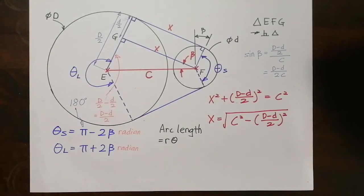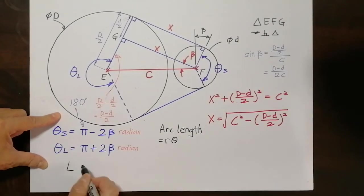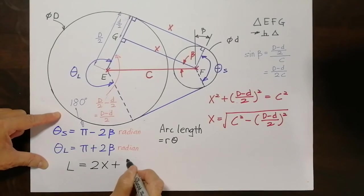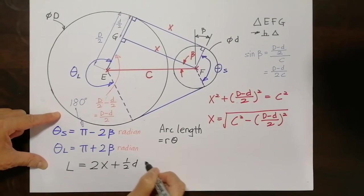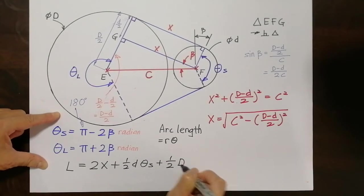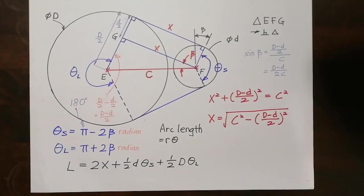Now I can say the whole belt length, L is the belt length, will be 2X plus half d times theta S plus half capital D times theta L. So that brings us to the main equation of a belt length.